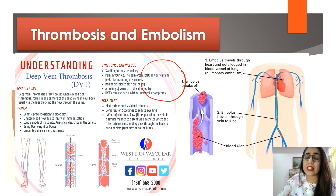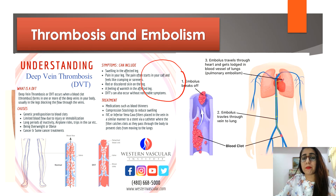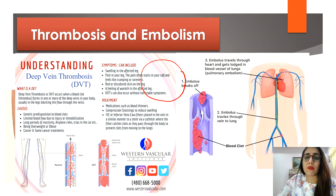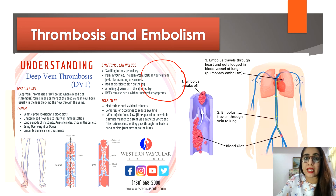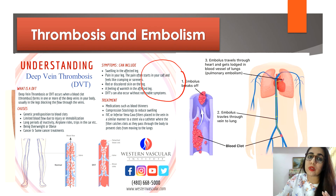Avoid smoking, as it can cause blood vessels to tighten and restrict blood flow, causing clots. For treatment, DVT usually involves taking anticoagulant medicine, which reduces the blood's ability to clot and stops existing clots from getting bigger. Heparin and warfarin are two types of anticoagulants commonly used to treat DVT.